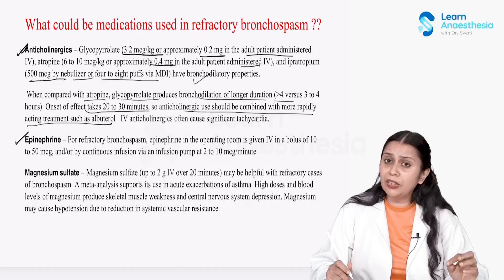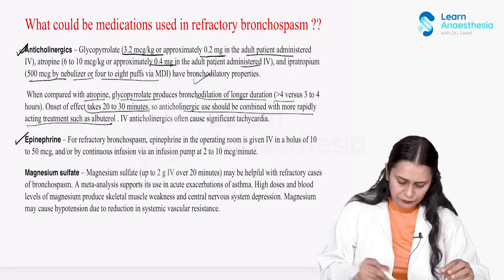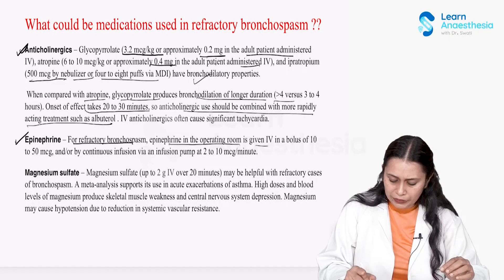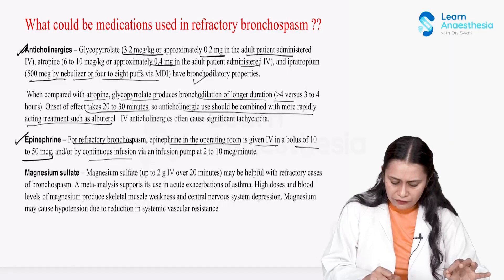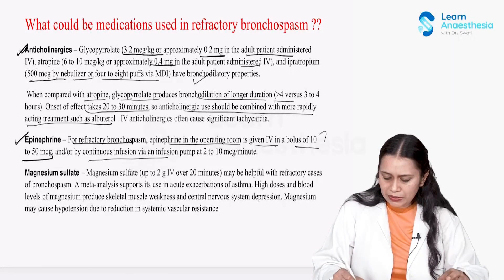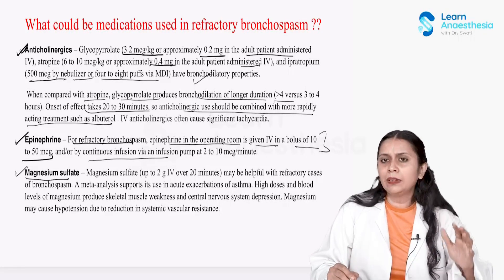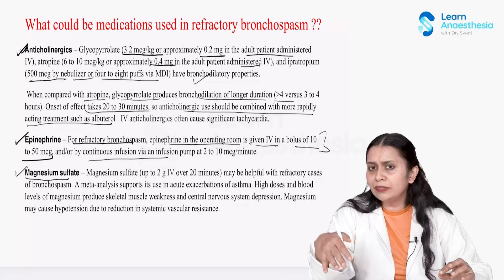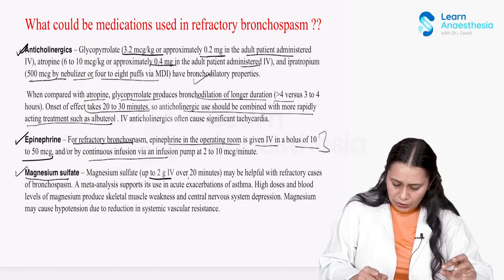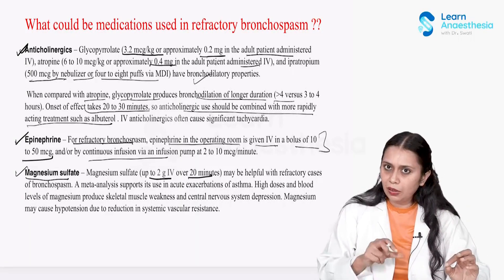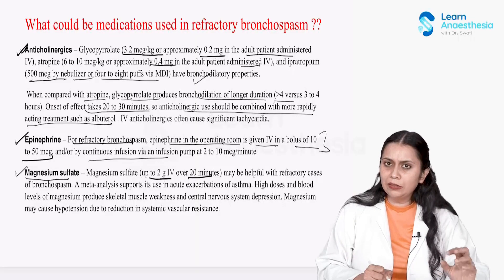For refractory bronchospasm, epinephrine can be given IV as a bolus of 10 to 50 mcg or as a continuous infusion at 2 to 10 mcg/min. Magnesium sulfate is a very good bronchodilator and rhythm stabilizer; use it when epinephrine is contraindicated such as in arrhythmia. Give a bolus of 2 g IV over 20 minutes; it is well supported in acute exacerbation of asthma.